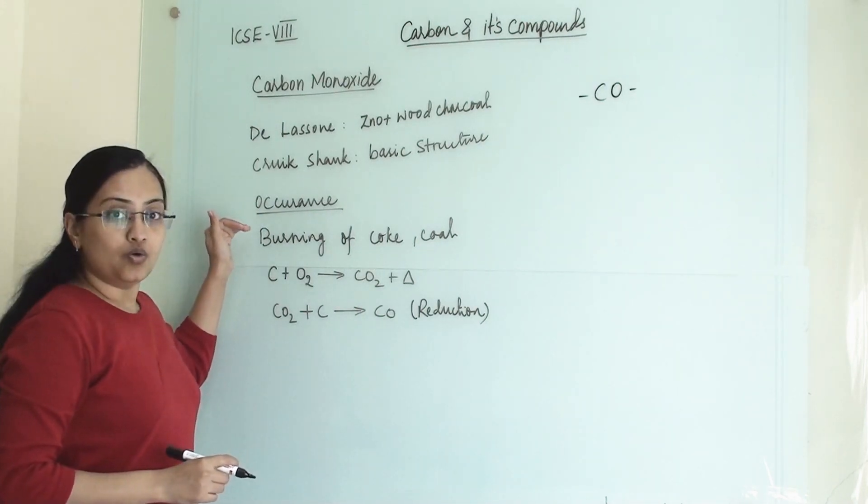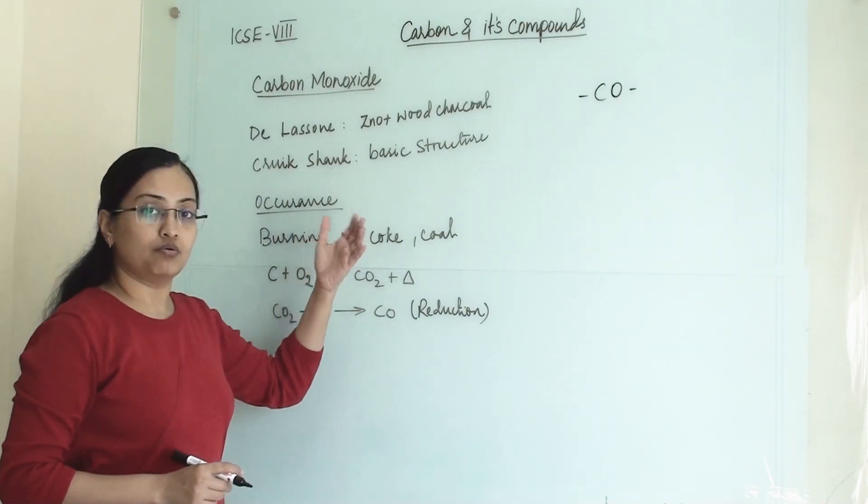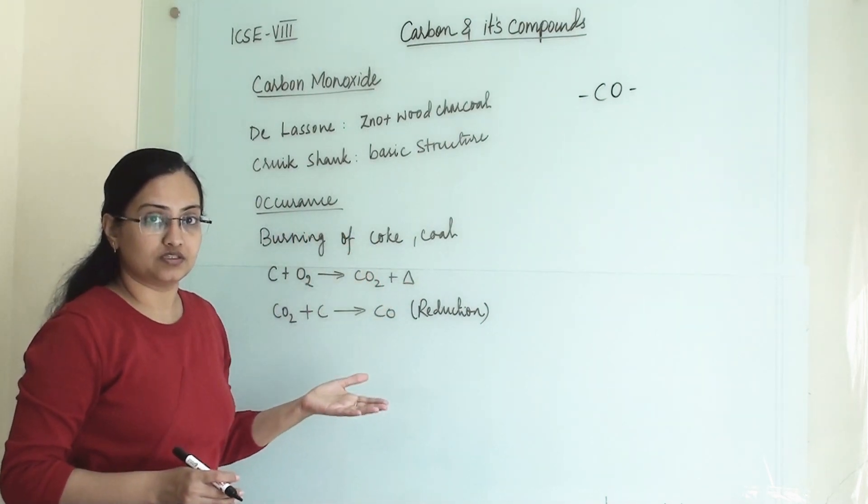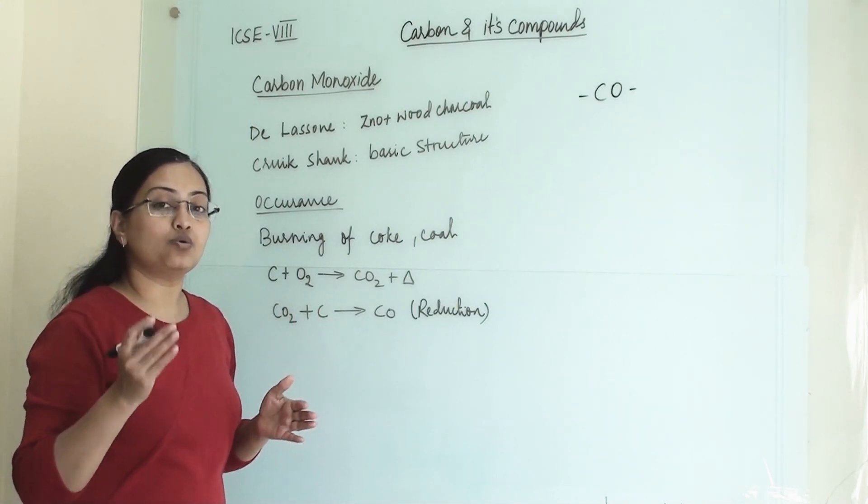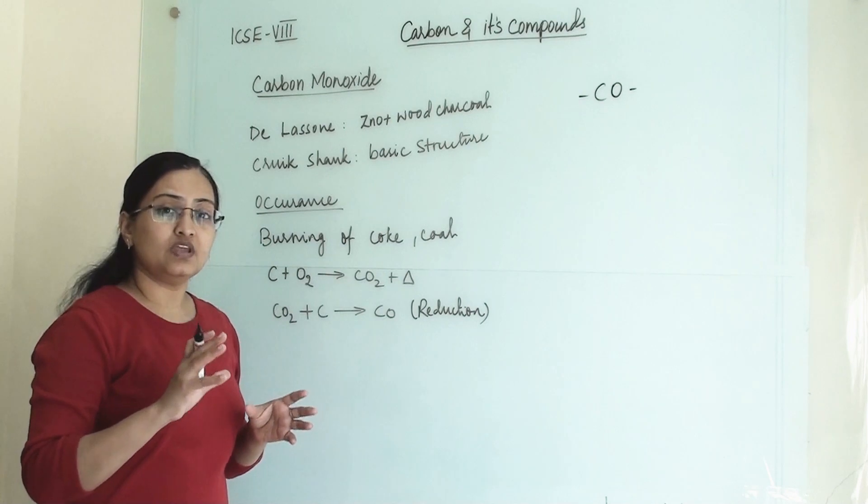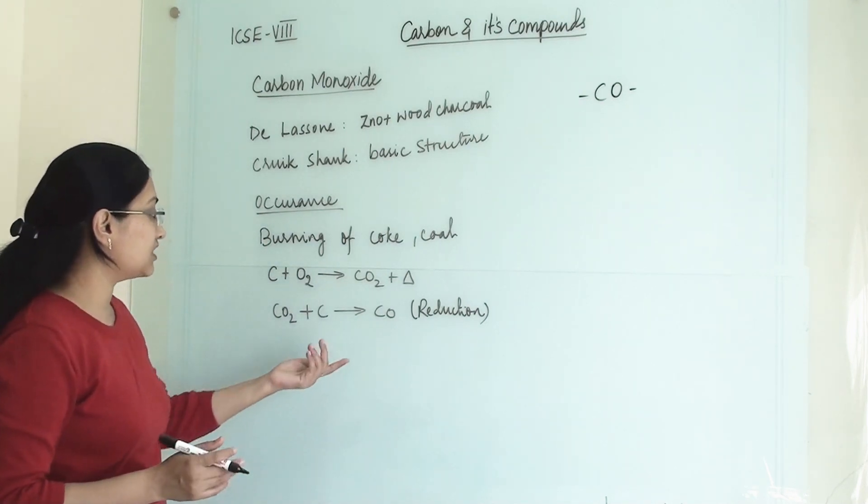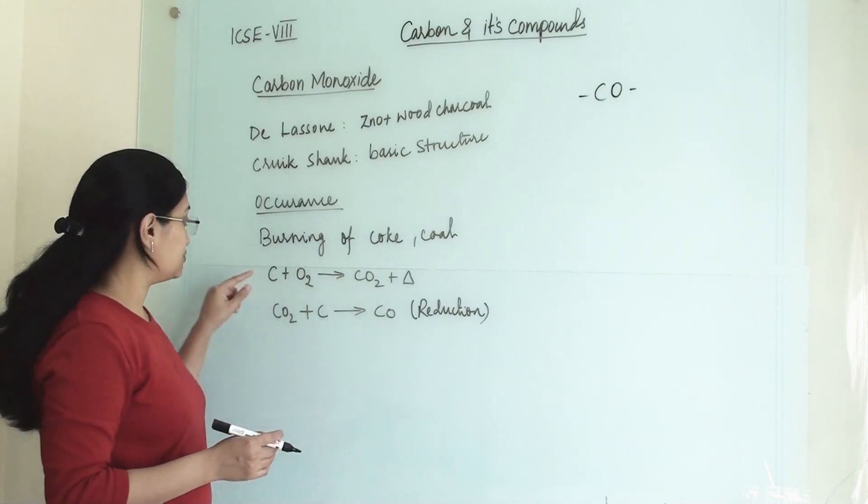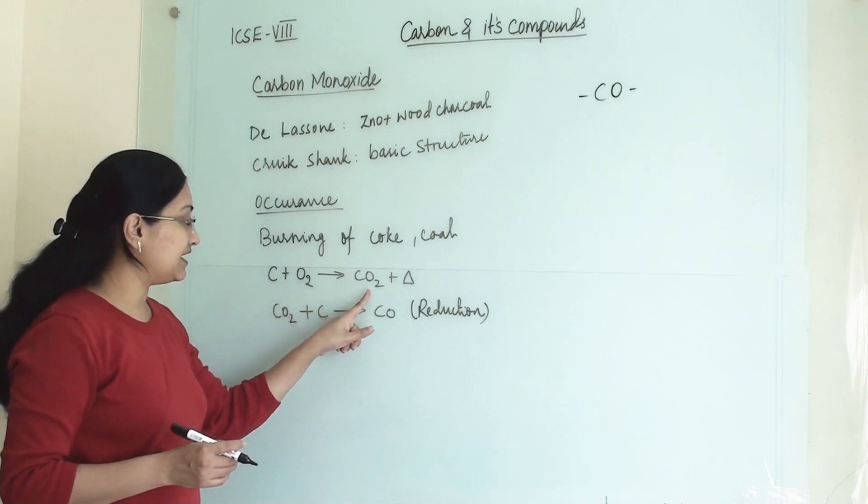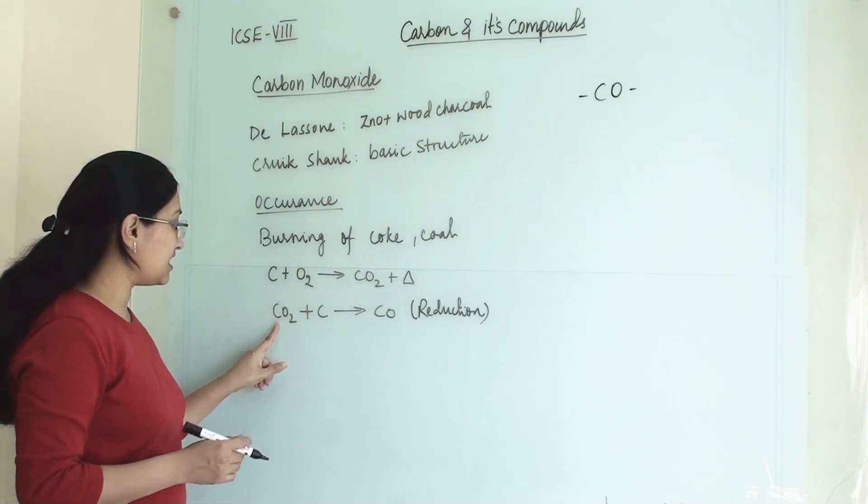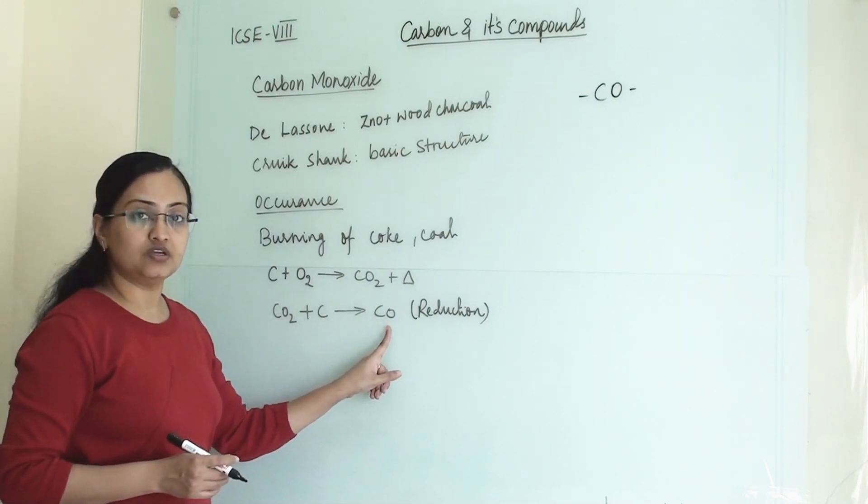Now, the occurrence of carbon monoxide: whenever we are burning coke, coal, or any petroleum product, carbon dioxide gas is generated, but along with it some of the carbon dioxide will get reduced to carbon monoxide and this is how carbon monoxide will be generated. So carbon when it burns with oxygen we will get carbon dioxide and heat will be generated. This carbon dioxide will further reduce to carbon monoxide.